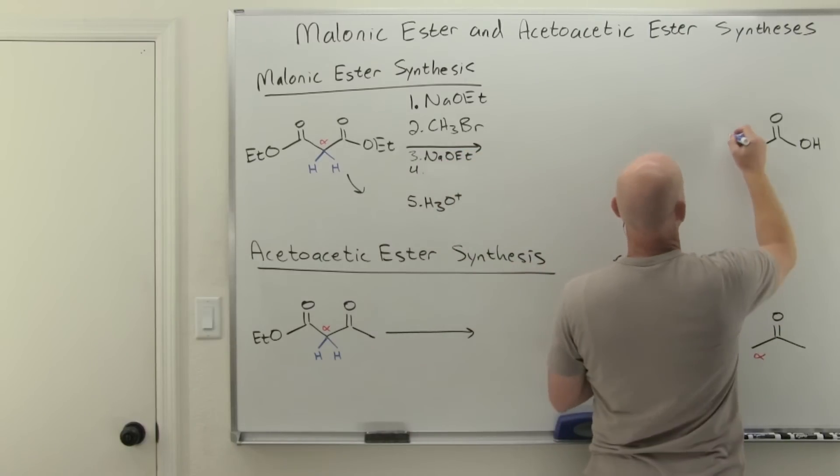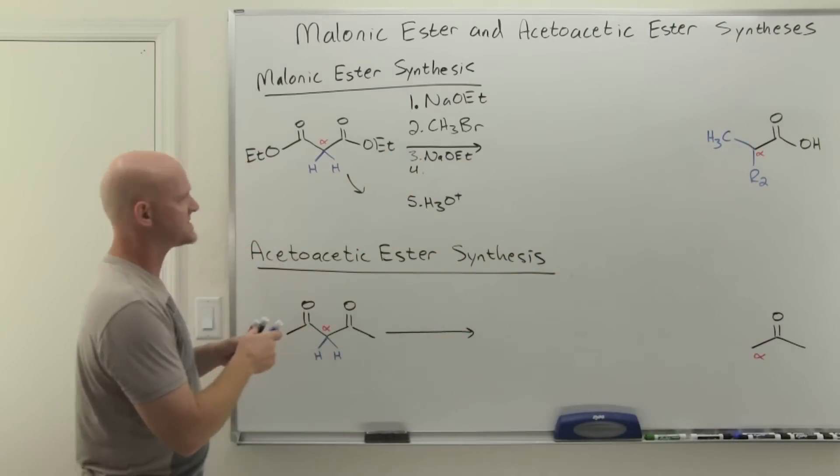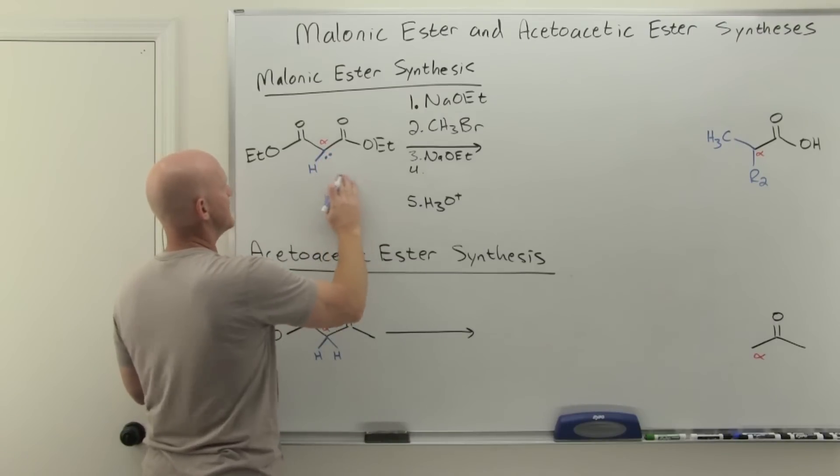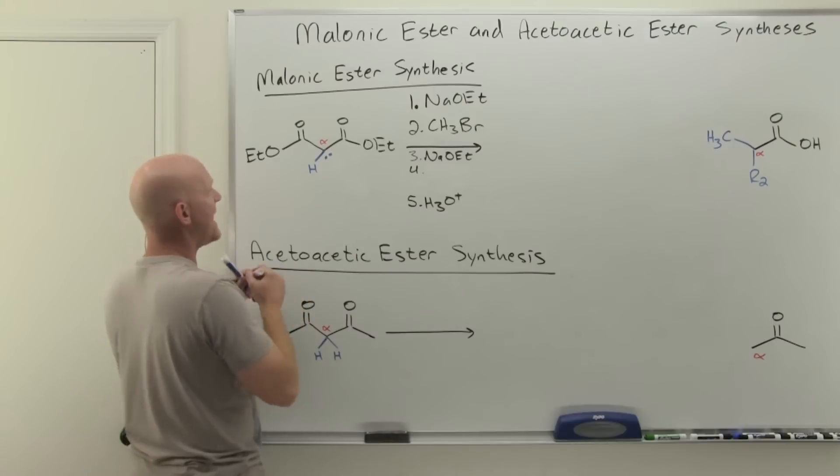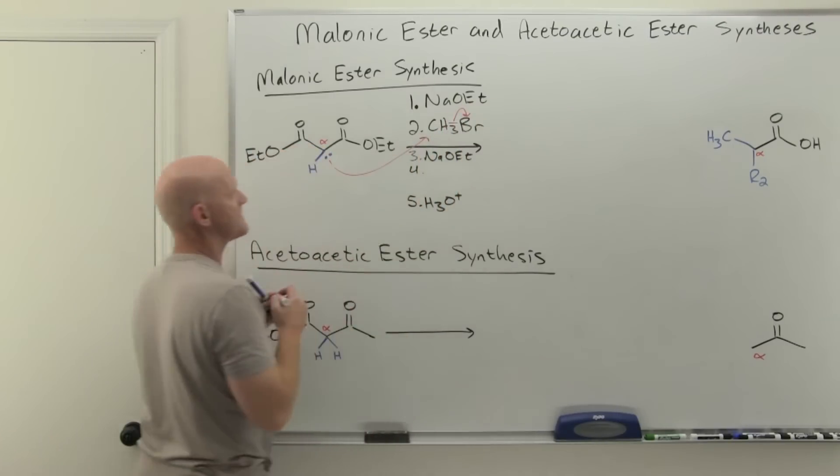That means in the final product that the thing we labeled R1 right here is now going to be a methyl group. The idea is again, that you're going to deprotonate one of these hydrogens initially to form an enolate. And then that enolate is going to come and do backside attack and kick off the halogen.